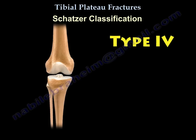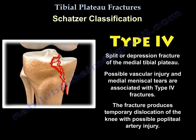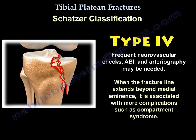Type 4 is the most important type. It is a split or depression fracture of the medial tibial plateau with possible vascular injury and medial meniscal tears. The fracture produces temporary dislocation of the knee with possible popliteal artery injury. Frequent neurovascular checks, ankle brachial index, and arteriography may be needed. When the fracture line extends beyond the medial eminence, it is associated with more complications such as compartment syndrome.